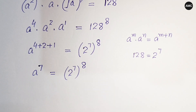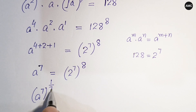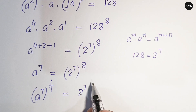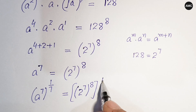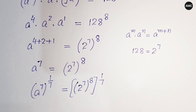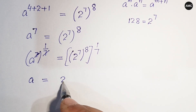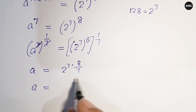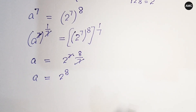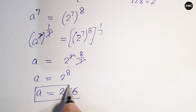We need to find a, not a to the power 7, so we raise both sides to the power 1/7. On the left, 7 and 1/7 cancel to give a. On the right, (2^7)^(8/7): the 7s cancel, giving 2 to the power 8. So a equals 2 to the power 8 equals 256.